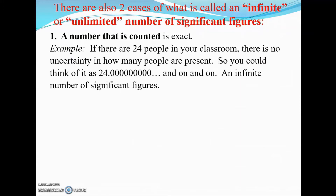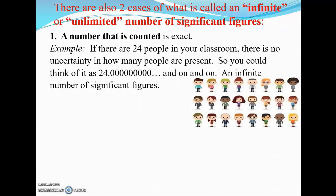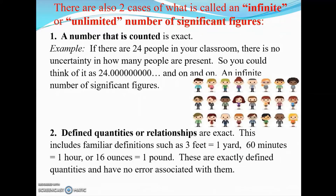Another example: if there are 24 people in your classroom and you count them, you don't have any uncertainty about how many people there are. So it's essentially 24.0000 and on and on — that is an infinite number of significant figures.